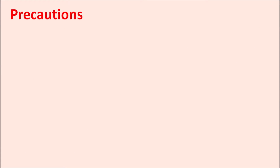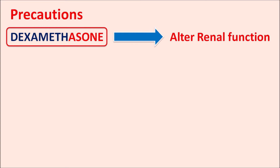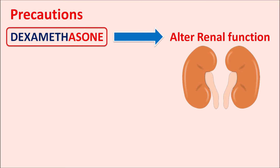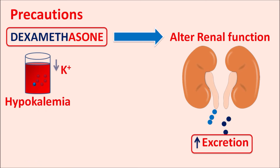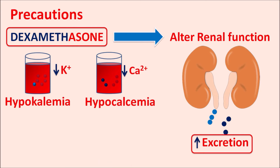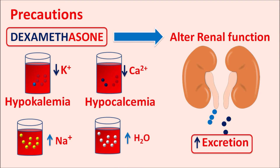An important precaution is that dexamethasone can affect renal functionality. It increases the excretion of elements such as potassium and calcium, reducing serum potassium levels and causing hypokalemia, and reducing serum calcium levels causing hypocalcemia. However, other electrolytes such as sodium and water are retained, so dexamethasone can increase serum sodium levels resulting in salt retention and hypertension, and also increase water levels in the serum resulting in fluid retention.